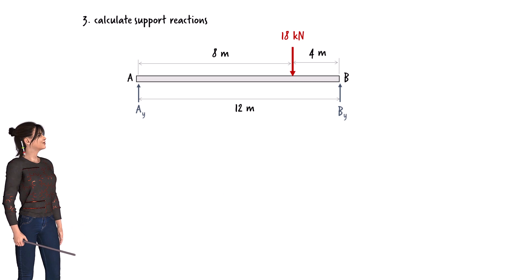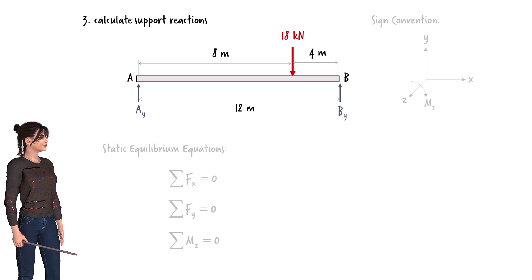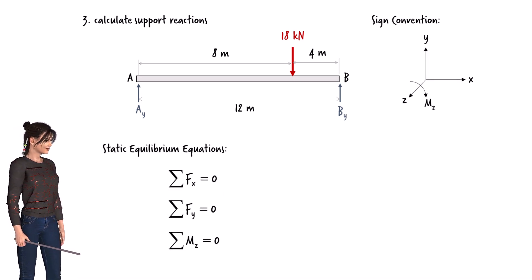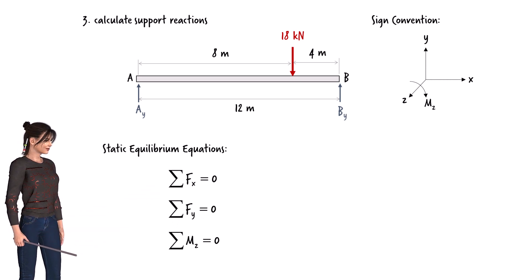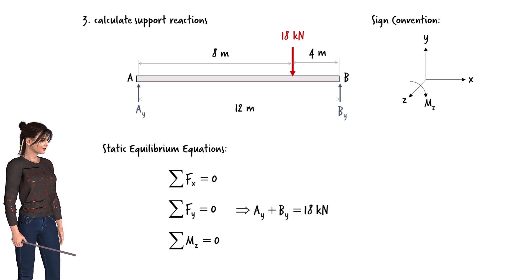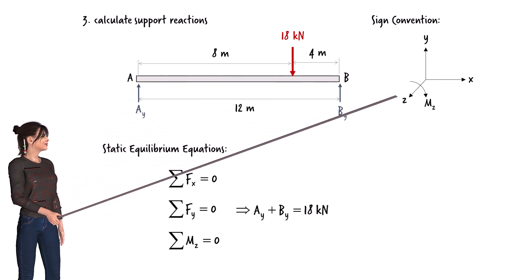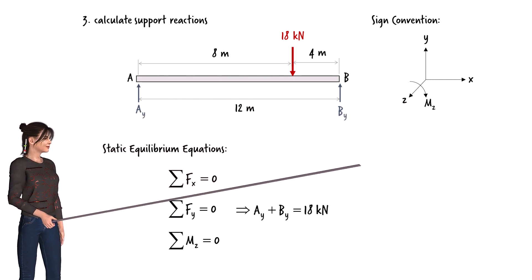We can use the following equilibrium equations to determine Ay and By. Since there are no horizontal forces, we don't need to use the first equilibrium equation. For the second equilibrium equation, we can write Ay plus By equals 18 kN. For the third equilibrium equation, we can choose the left end of the beam as our point of reference. Taking clockwise moments as positive, we get...